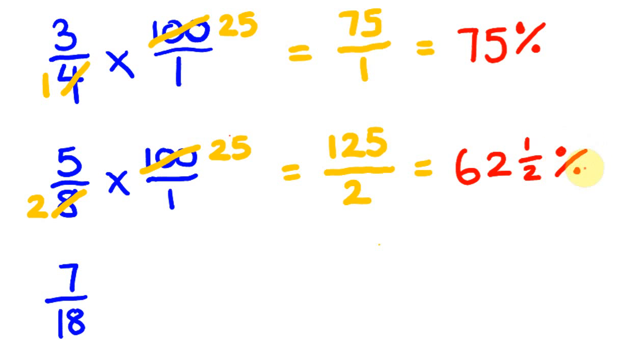Let's have a look at our last example. 7 over 18—we are going to place this over 100, so we multiply this by 100 over 1. Now we look for a number that goes into both the top and the bottom to simplify this. You're going to see that 2 goes into both of these—2 goes into 100 50 times and it goes into 18 nine times.